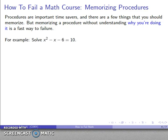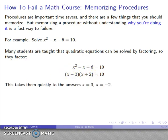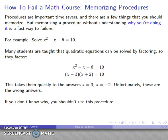For example, if I have the quadratic equation x squared minus x minus 6 equals 10 - many of us have learned the procedure that when you have a quadratic equation you can factor it. We'll factor it as x minus 3 times x plus 2, and we arrive at the answer x equals 3, x equals negative 2, which is the wrong answer. If you don't know why factoring doesn't work in this case, you probably shouldn't be using the procedure.